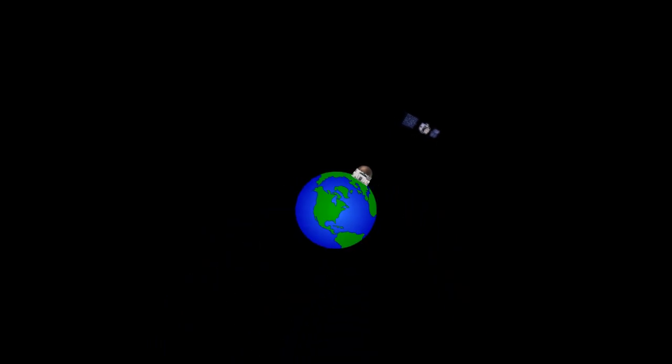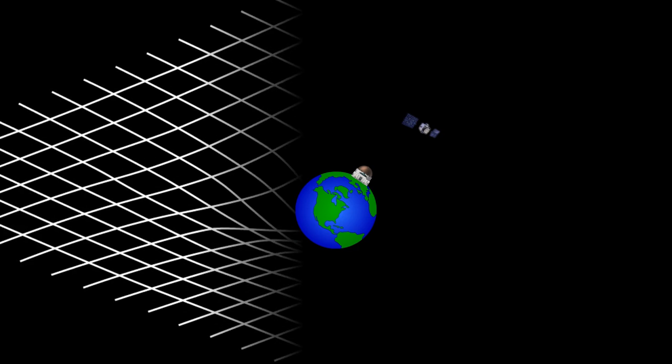We've already seen how moving faster through space causes time to appear to slow down, so space and time are linked, and large bodies like the Earth warp space-time.